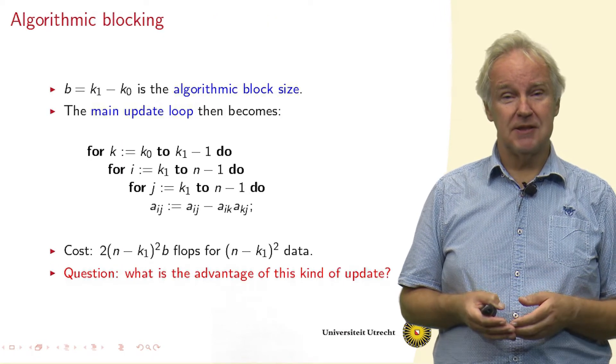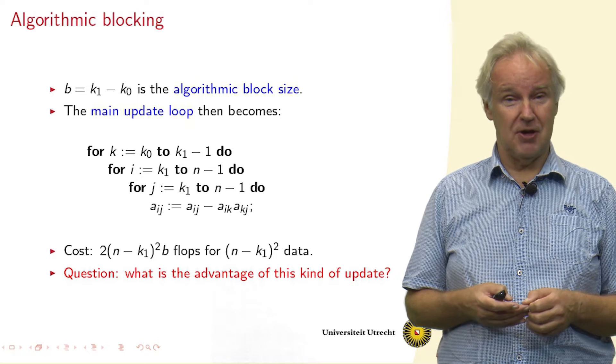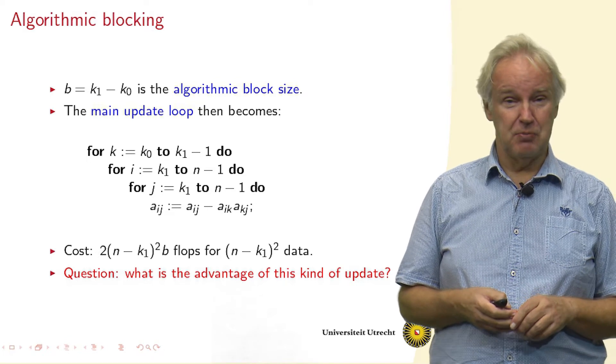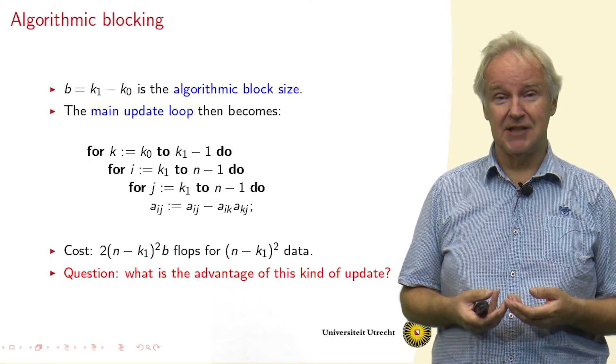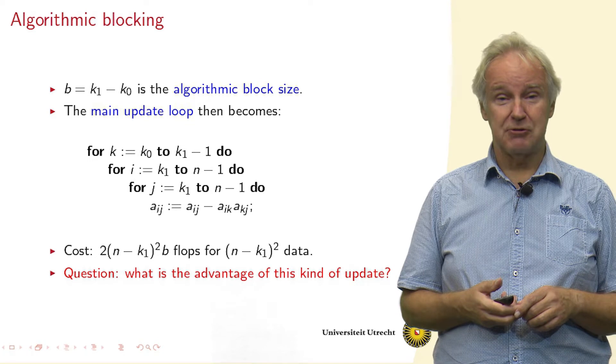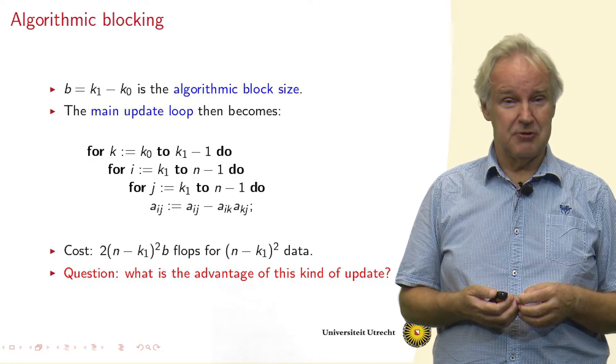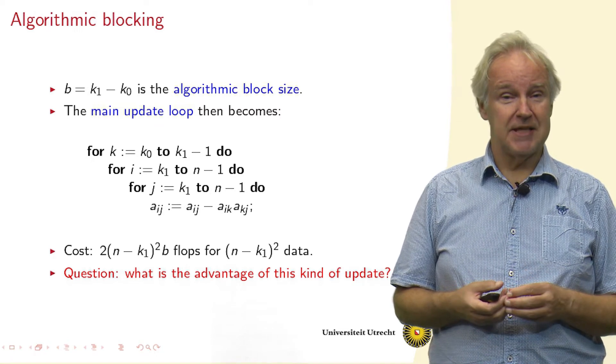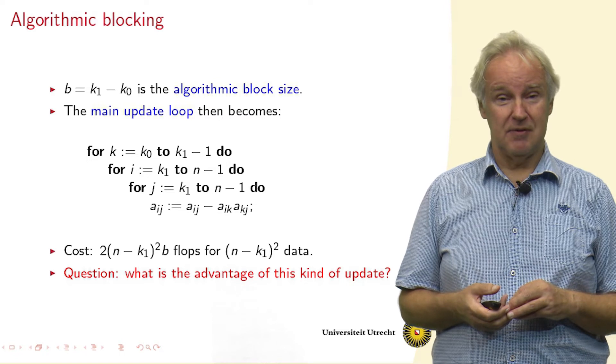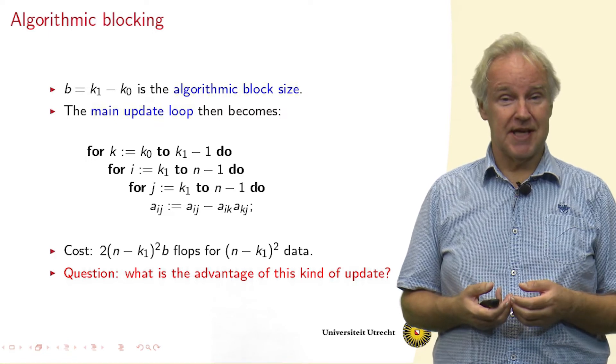After a while when we reach stage K1 then we perform all those delayed updates. This is a triple loop that we then get. You recognize the loop over I and J where we're changing the A_IJ's, but then we have an outermost loop from K0 to K1. When we count the flops of this triple loop then you see that we have (n - K1)² times B times 2 flops, and the number of data that we touch is (n - K1)².